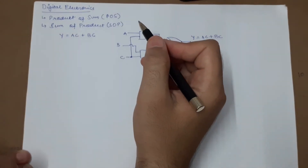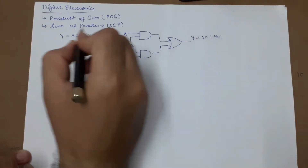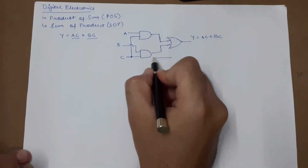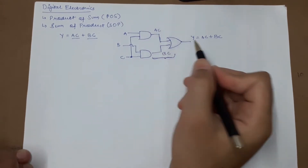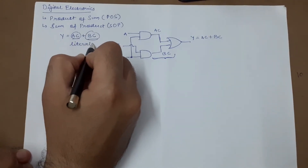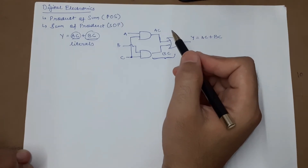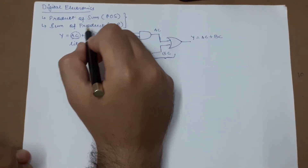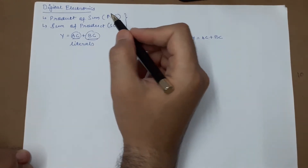When we realize the Boolean equation by using gates, each literal acts as an input. This input will be AC and this input will be BC, so each term is considered as a literal. Any logic expression can be expressed in these two forms — product of sum and sum of products — and these two forms are suitable for reducing the given logic expression.